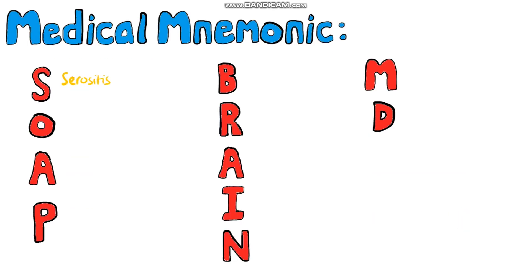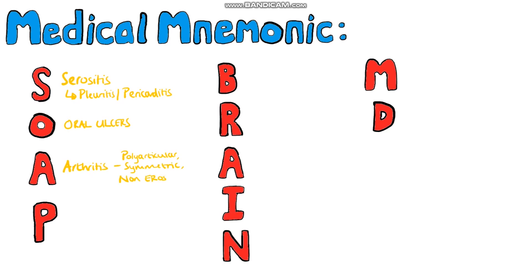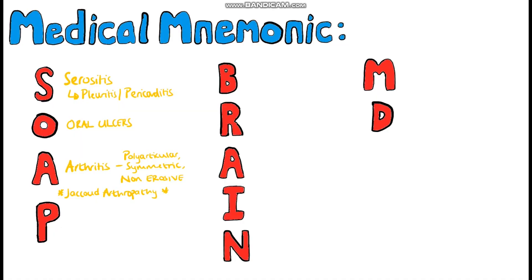SOAPBRAINMD stands for S — serositis, including pleuritis and pericarditis. O is for oral ulcers. A is for arthritis, which is typically a polyarticular, symmetrical, and non-erosive arthritis. Usually this is in the periphery and is the result of involvement of the joint capsule, ligaments, and tendons — that's why they're called Jaccoud arthropathies.